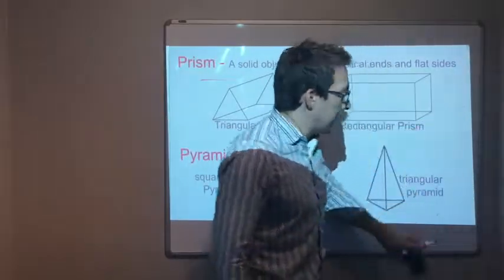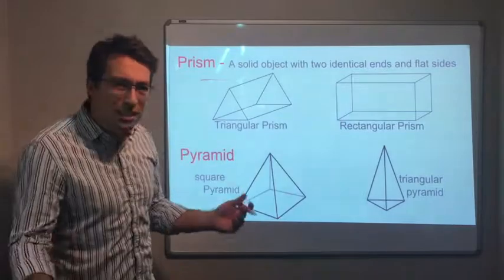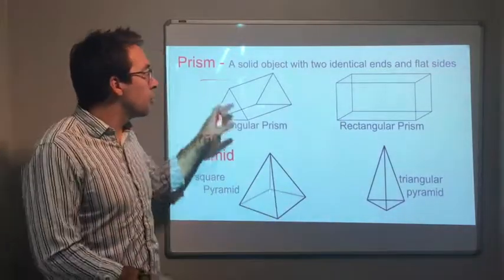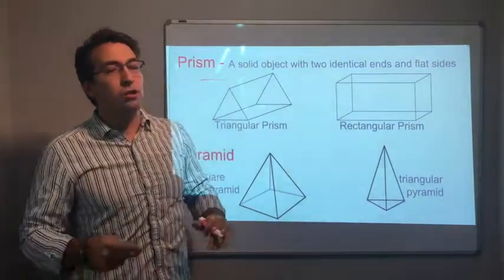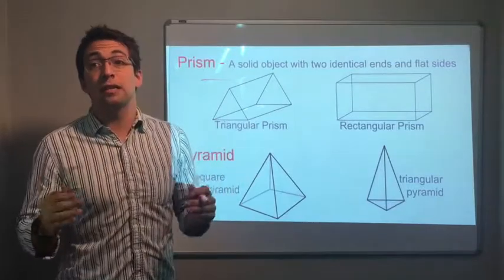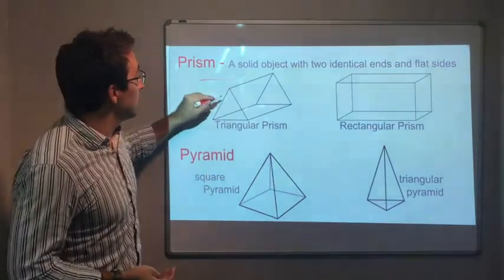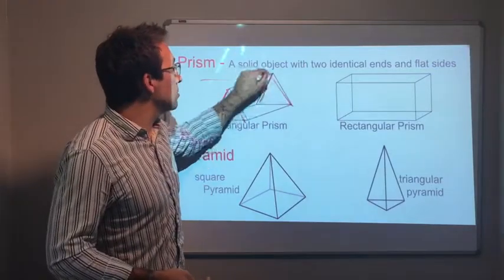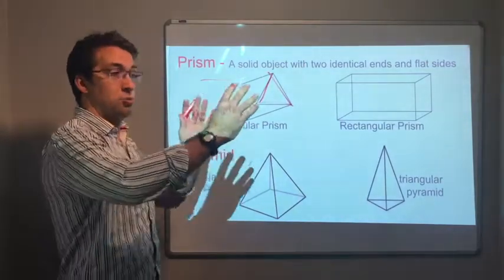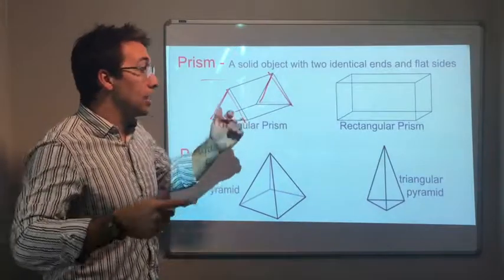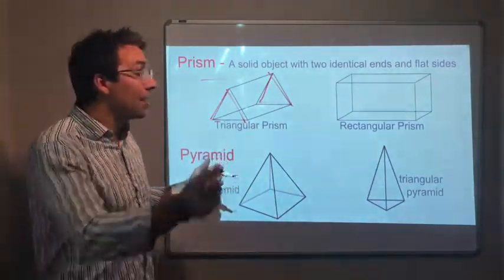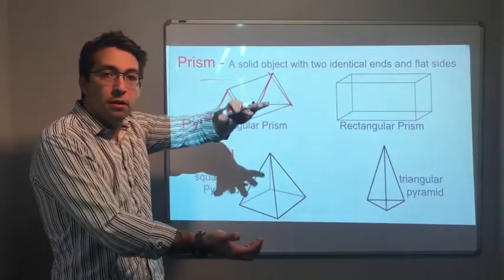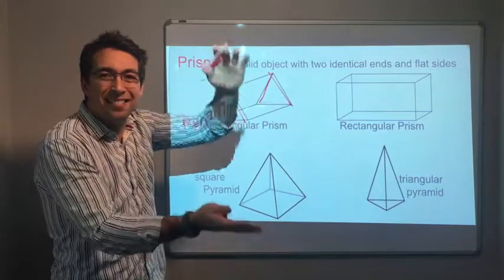So another thing to look at are prisms. Well, what's a prism? A prism is a solid object with two identical ends and flat sides. So this is a triangular prism. And notice that these triangles are identical. They're spread out, right? So a cylinder, if we go back, a cylindrical prism. There's a circle on each side and it's flat, right?